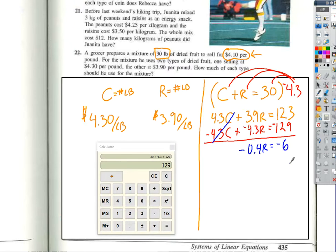So then, what do I have to do to both sides to get the R all by itself? Divide by negative 0.4. Yeah, let's divide by negative 0.4, divided by negative 0.4. And we are going to get 6 divided by 0.4. No, that's 6.4. 6 divided by 0.4. And so that means we have R is equal to 15 pounds.